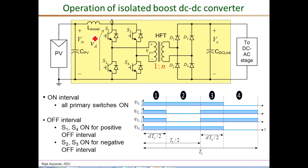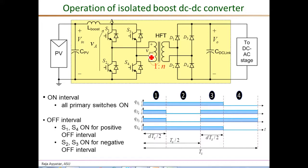Similar to the off-interval of the non-isolated boost, there are actually two distinct off intervals — one for the positive half cycle and one for the negative half cycle. In these two off intervals, part of the stored energy is fed to the output through the transformer. In the positive off interval, the diagonal pair consisting of S1 and S4 conduct, releasing part of the stored energy to the output with positive voltage across the windings. In the negative off interval, the energy from the inductor is released through S3 and S2, applying a negative voltage across the winding, making the average voltage across the transformer zero, which is essential in ensuring that the transformer does not saturate.